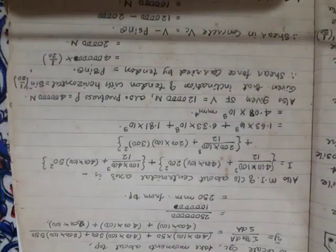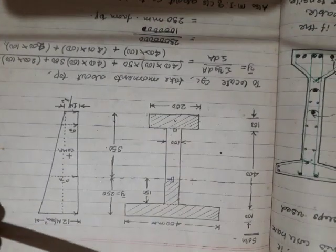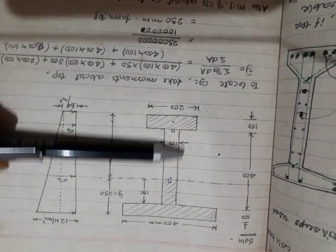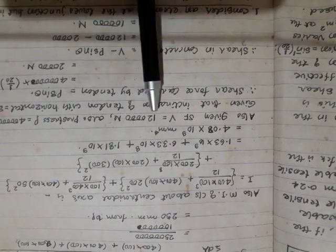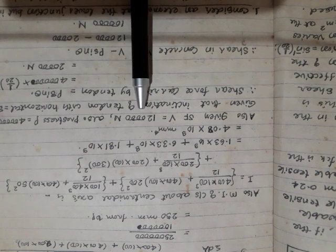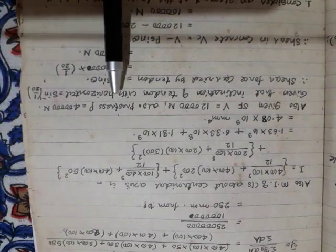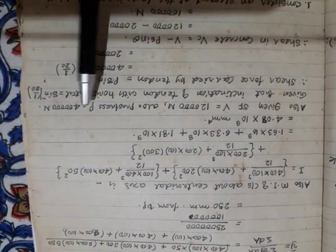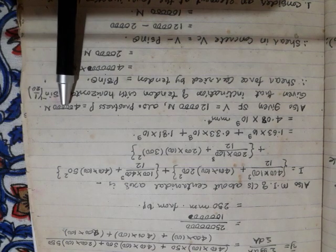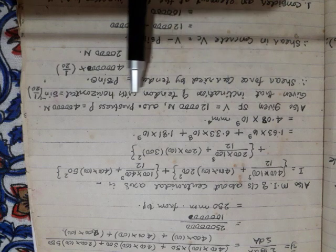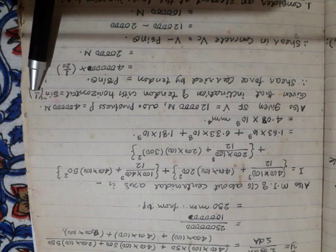At the given cross-section, the shear force V is 1,20,000 Newtons. The pre-stressing force in the cable is 4,00,000 Newtons (4 lakhs). The cable has an inclination of sin⁻¹(1/20) with the horizontal.